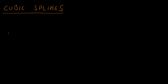Welcome to Math for Game Developers, where today we are going to make a roller coaster. Because we're pro game developers, we don't want to specify every single point where the roller coaster goes through, so we're just going to specify the important points. These yellow points are the control points for our roller coaster curve, and we want nice smooth transitions between each point.